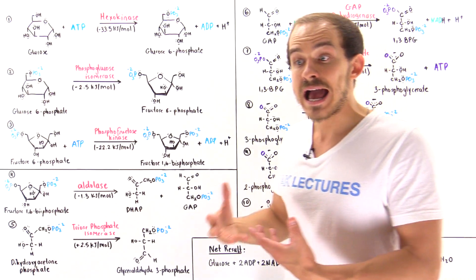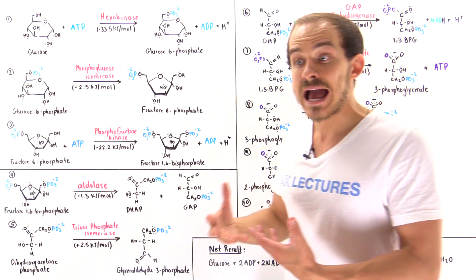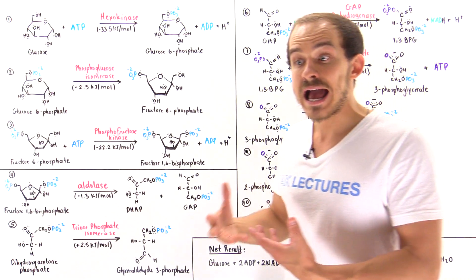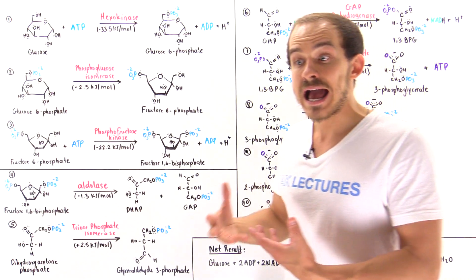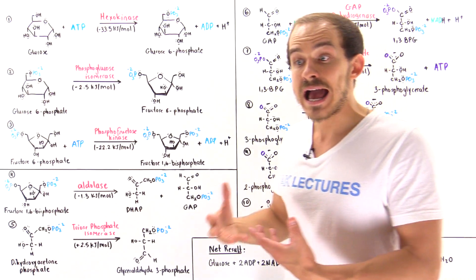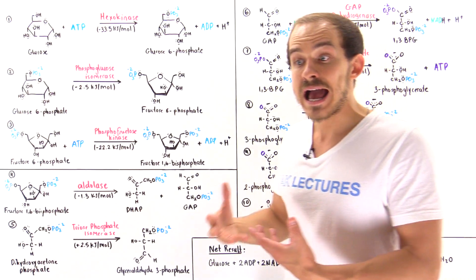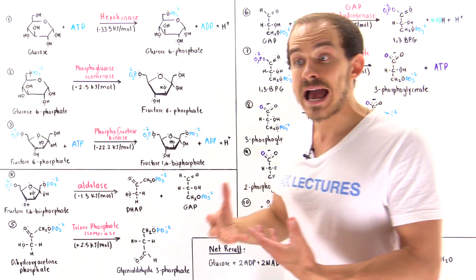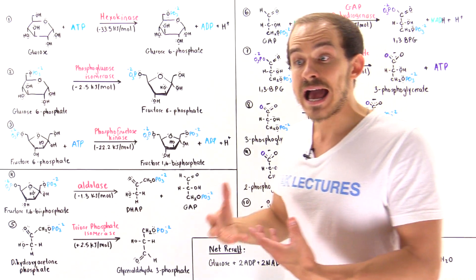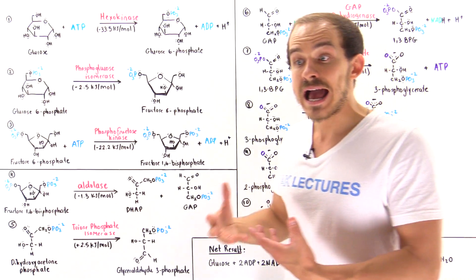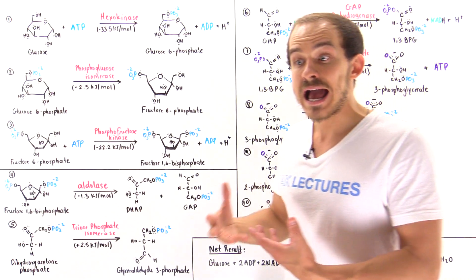Summing all individual reactions—and multiplying the stage three energy values by two since those steps occur twice—the net inputs for glycolysis are: one glucose, two ADP, two NAD⁺, and two inorganic phosphates (Pᵢ).